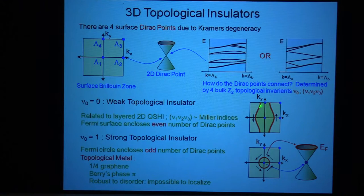And so this is a weak topological insulator. The important thing here is that this Fermi surface on the surface, it encloses two of these time reversal invariant Dirac points.